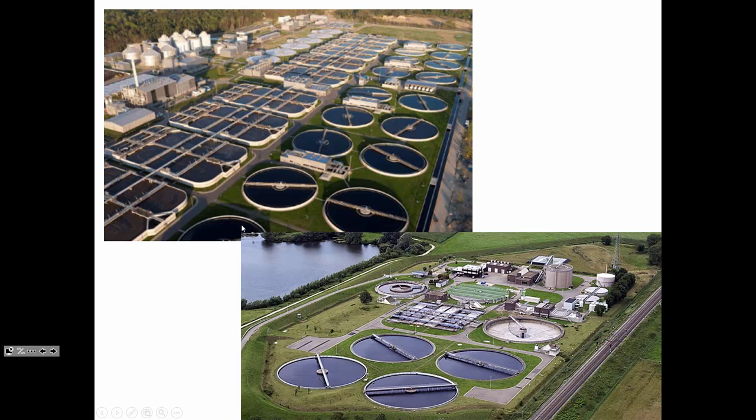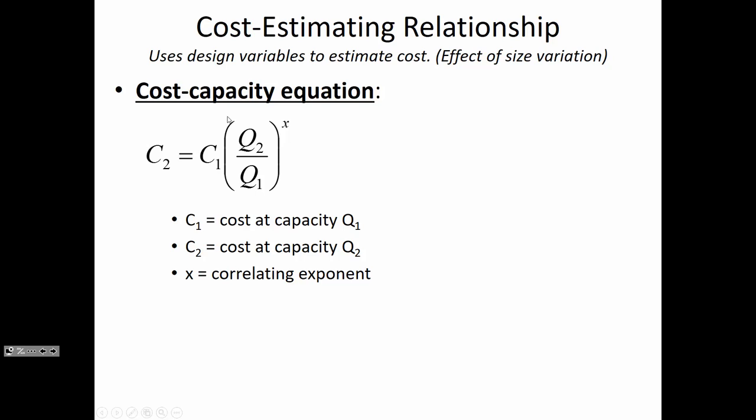A facility that's this big may have some construction efficiencies and some material cost efficiencies that a smaller project like this couldn't capture. And so we may not be able to just scale linearly from a large facility to a small facility. So this larger one has 18 clarifiers. This has only 4. Most likely the price is not going to be 4/18ths of the bigger one. There's going to be some sort of a non-linearity that we have to keep track of. The cost capacity equation allows us to do that.